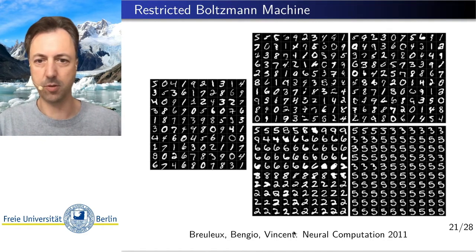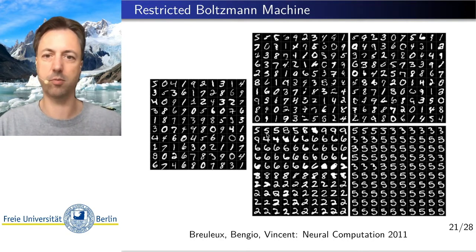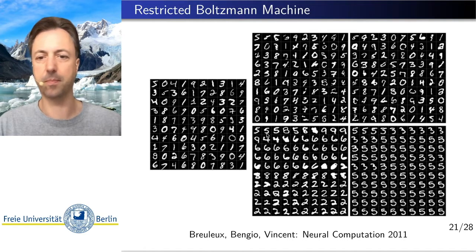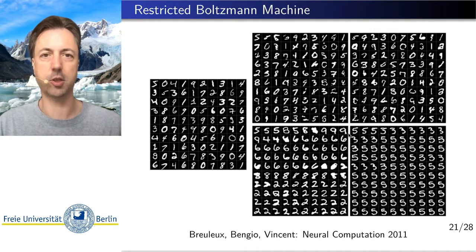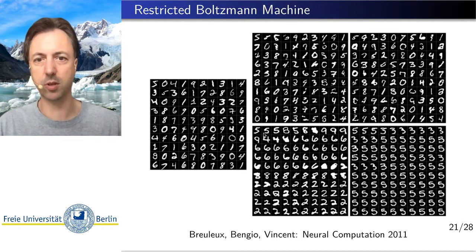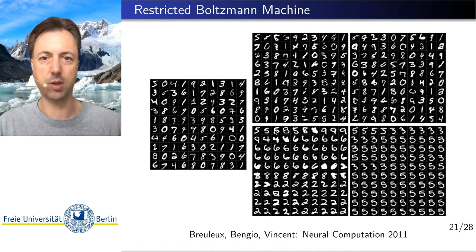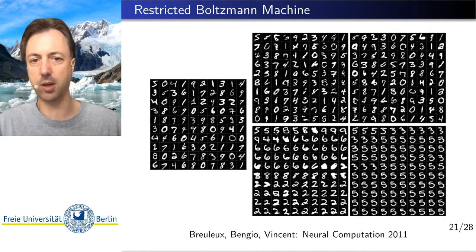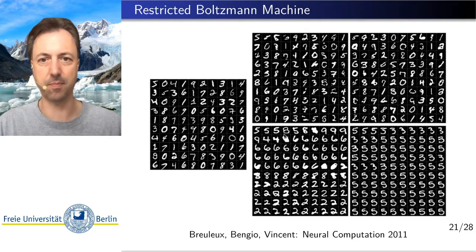Here on the bottom you see the result of Gibbs sampling. Starting from a 5, we sample sequences of the hidden and visible variables and plot in every iteration the result of the samples of the visible variables. You can see that the generation of such samples using Gibbs sampling is correlated. You do not switch independently to a new digit but tend to keep the digit close to the image generated in the last step.